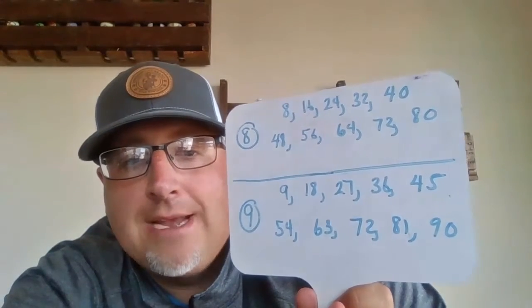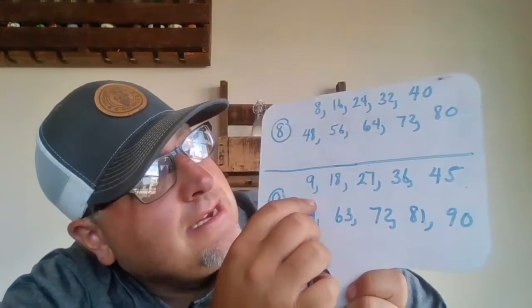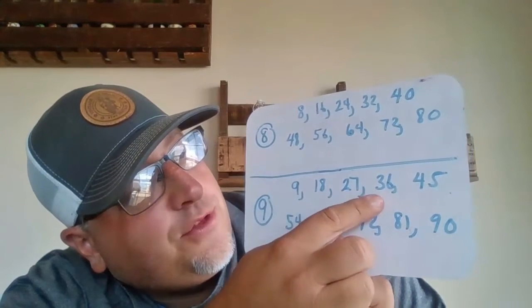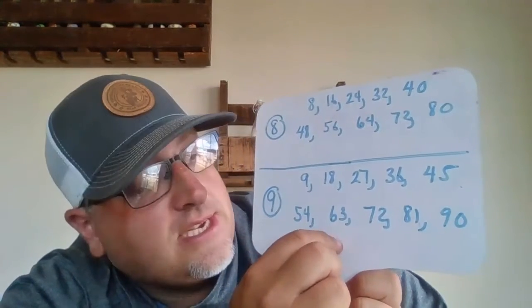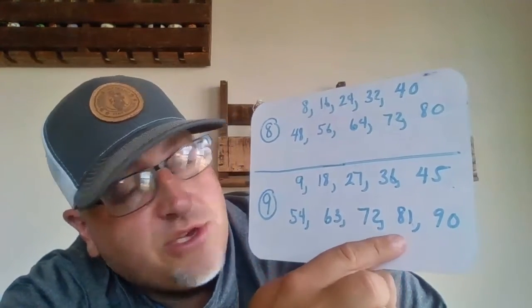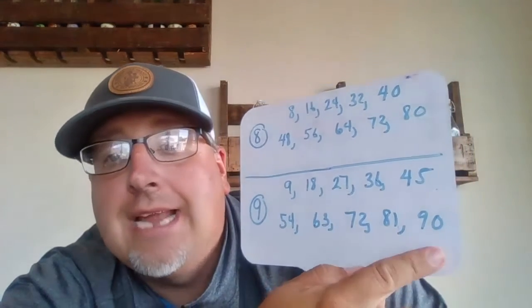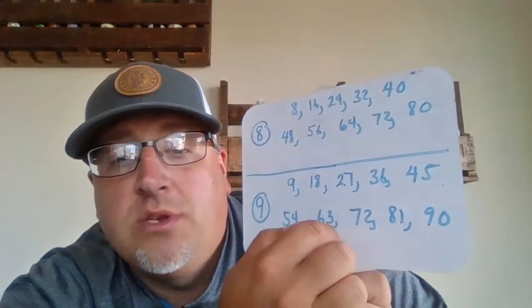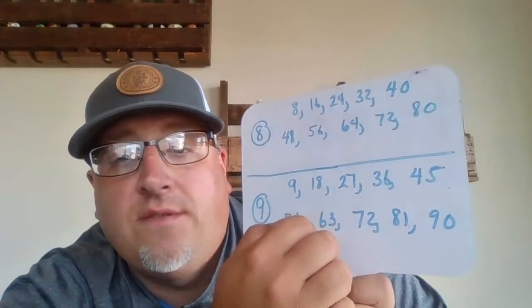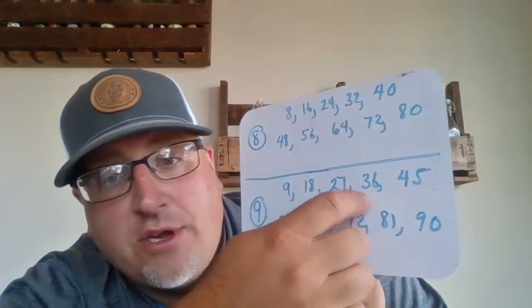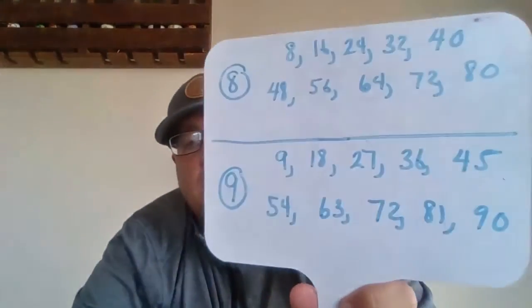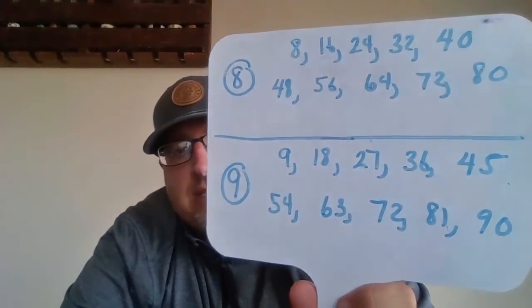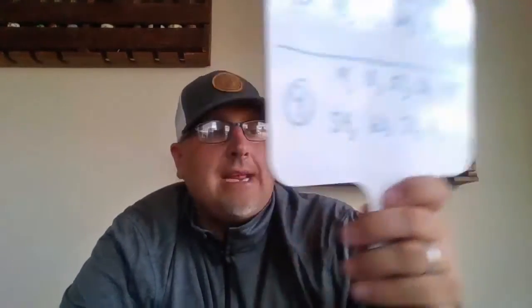Let's count by 9s all the way to 90. Ready? 9, 18, 27, 36, 45, 54, 63, 72, 81, 90. Backwards: 90, 81, 72, 63, 54, 45, 36, 27, 18, and 9. There is counting by 8s and 9s — it's a good review, a good way to get you guys practicing skip counting and making sure we know those answers.